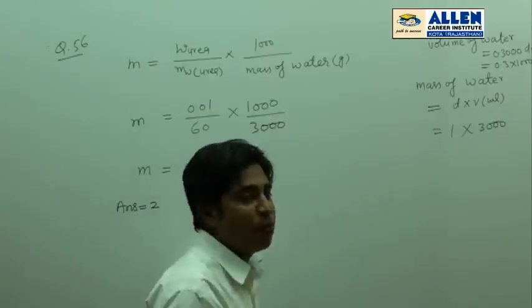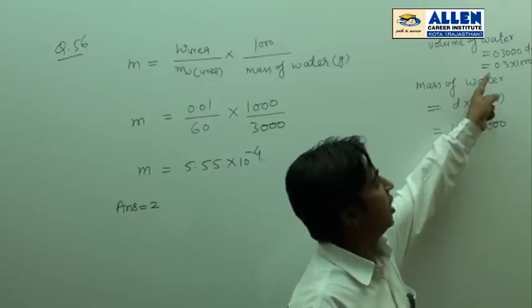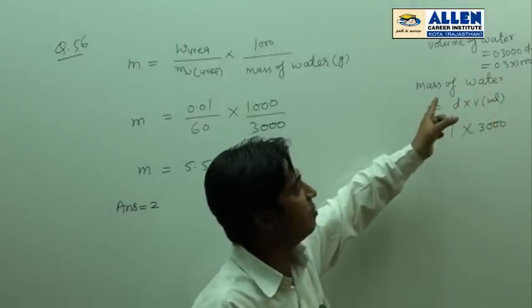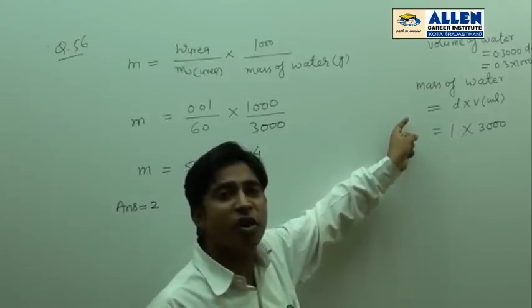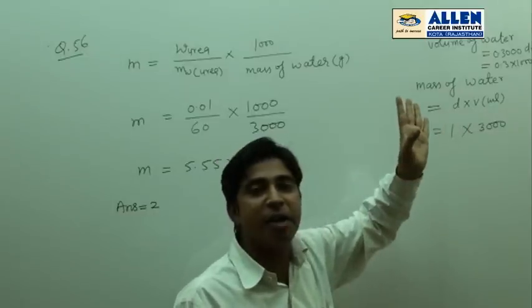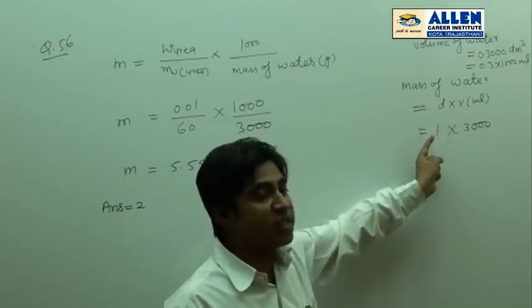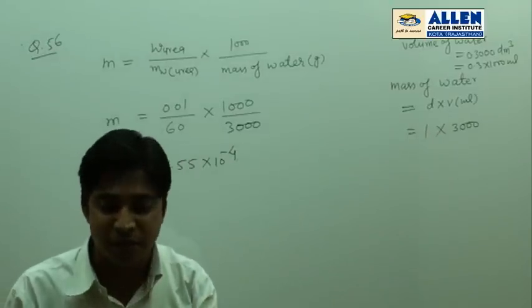Given volume of water is 0.3 decimetre cube. In milliliters, 0.3 times 1000 equals 300 milliliters. Mass of water is equal to density of water times volume of water in milliliters. Density is 1, so mass of water equals 300 grams.